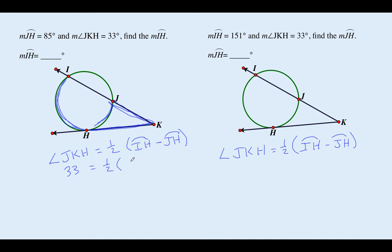JKH they tell us is 33, one half. IH is what we're looking for minus 85. First step is times both sides by two. Add 85 to both sides. 151 equals IH. Come over here, times both sides by two.